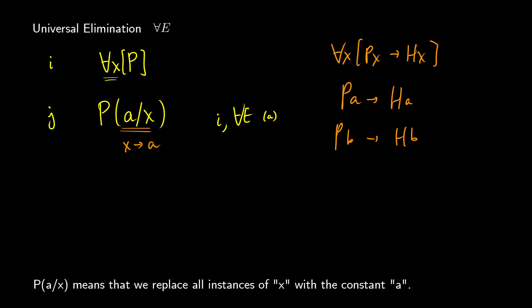As a quick example: if we have 'for all x, p(x, y)', when we do universal elimination we only change the x's. So this becomes 'p(a, y)', where y here is still likely going to be a variable rather than a constant.